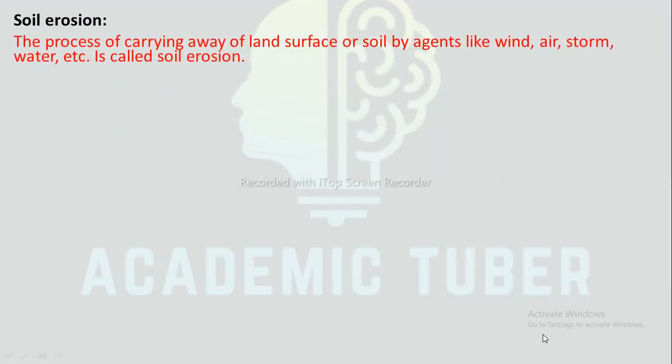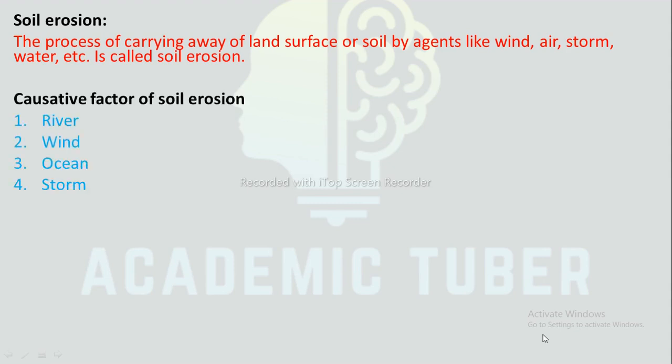Soil erosion: The process of carrying away of the land surface or soil by agents like wind, storm, and water is called soil erosion. Causative factors of soil erosion include rivers, wind, ocean storms, and others.